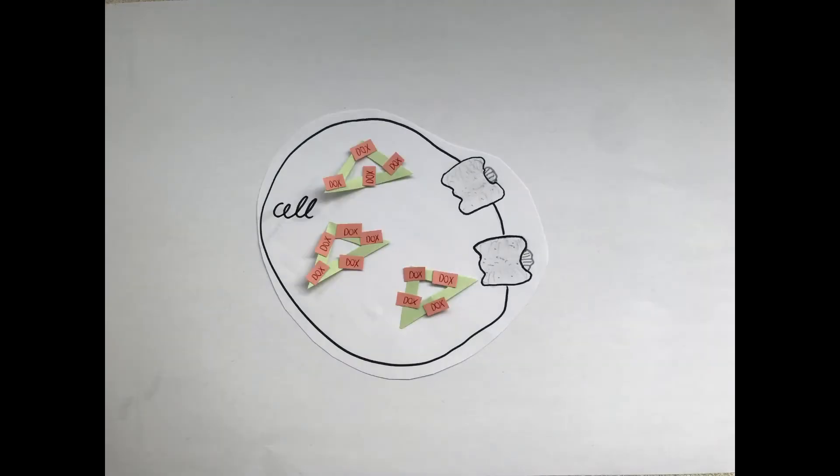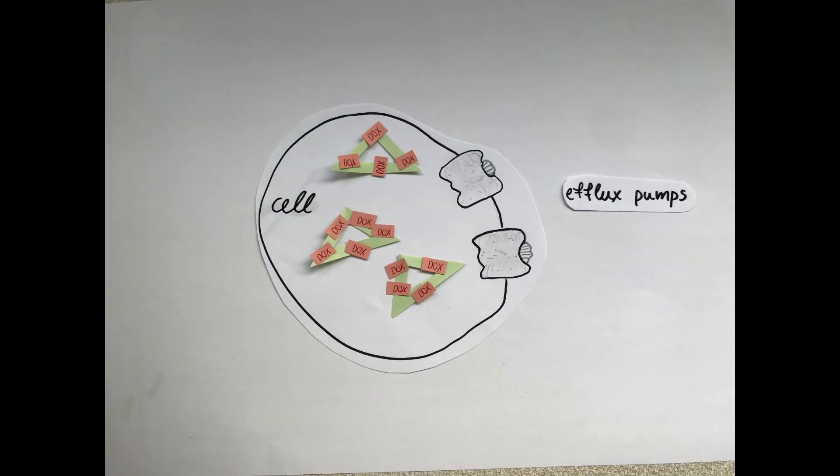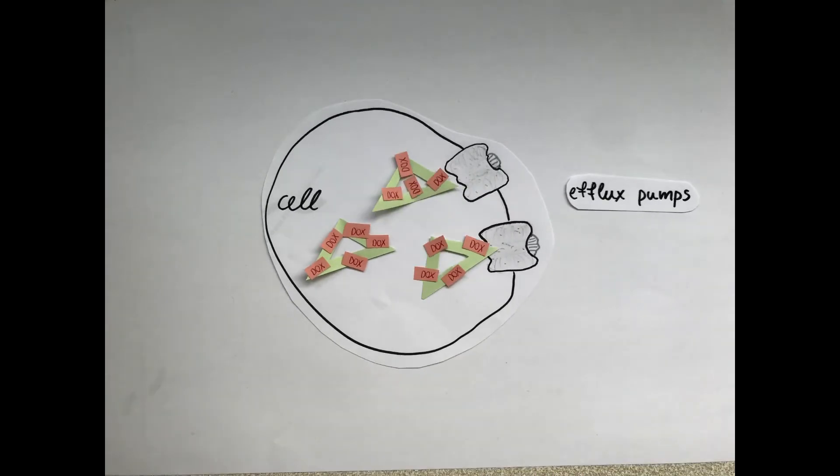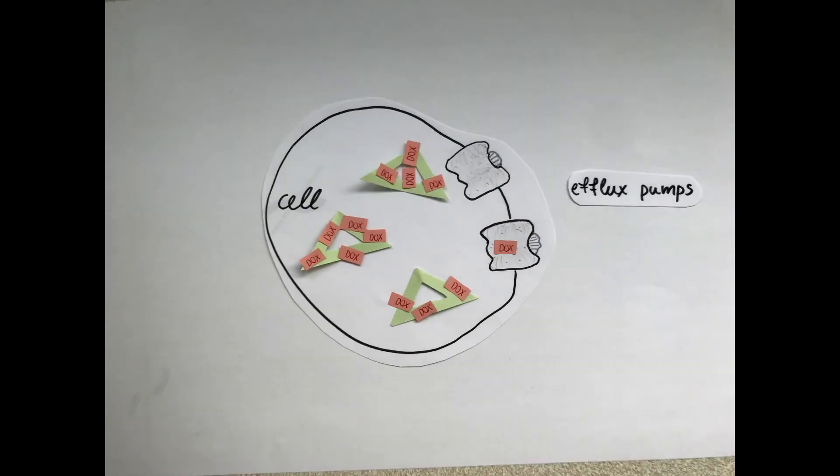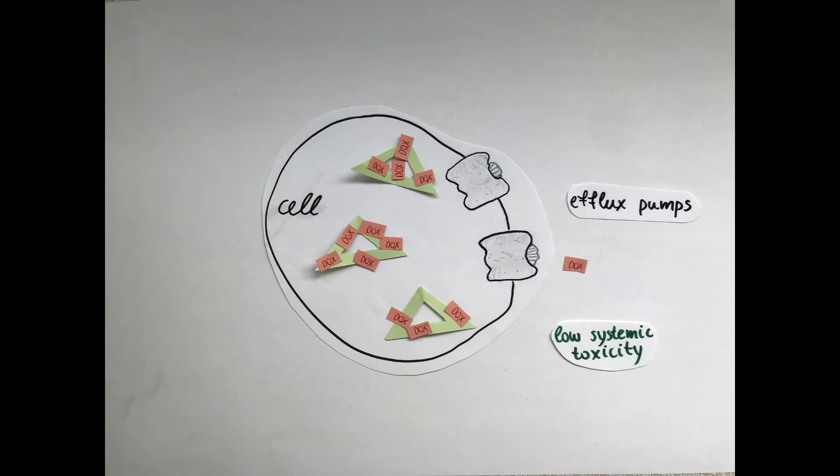What is great with this approach is that dox is not only delivered to the tumor sites, but by being trapped in the origami structure, it can escape the cell through the membrane efflux pumps that are usually highly expressed in tumor cells. This results in lower systemic toxicity as minimal quantities of dox escape.